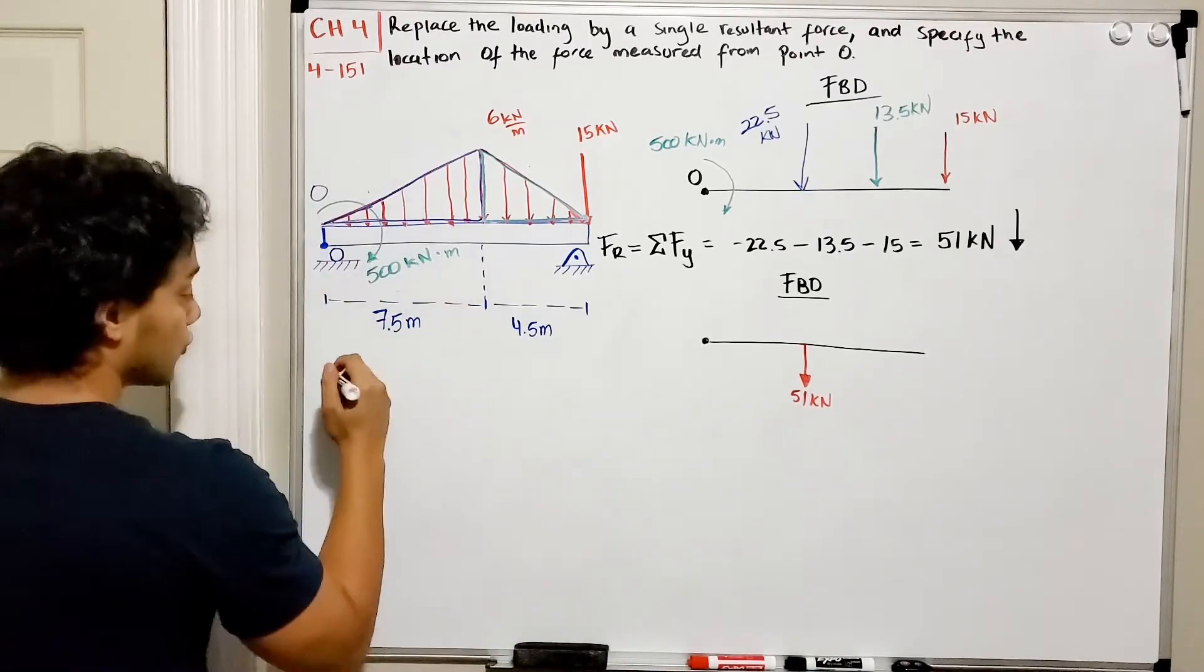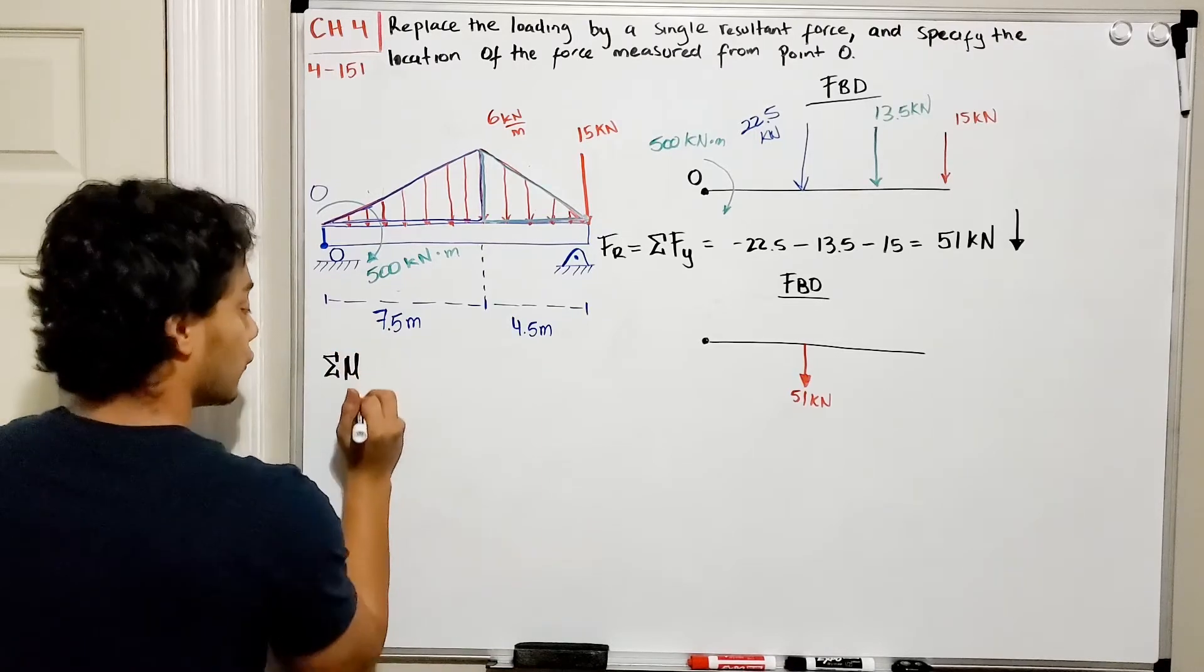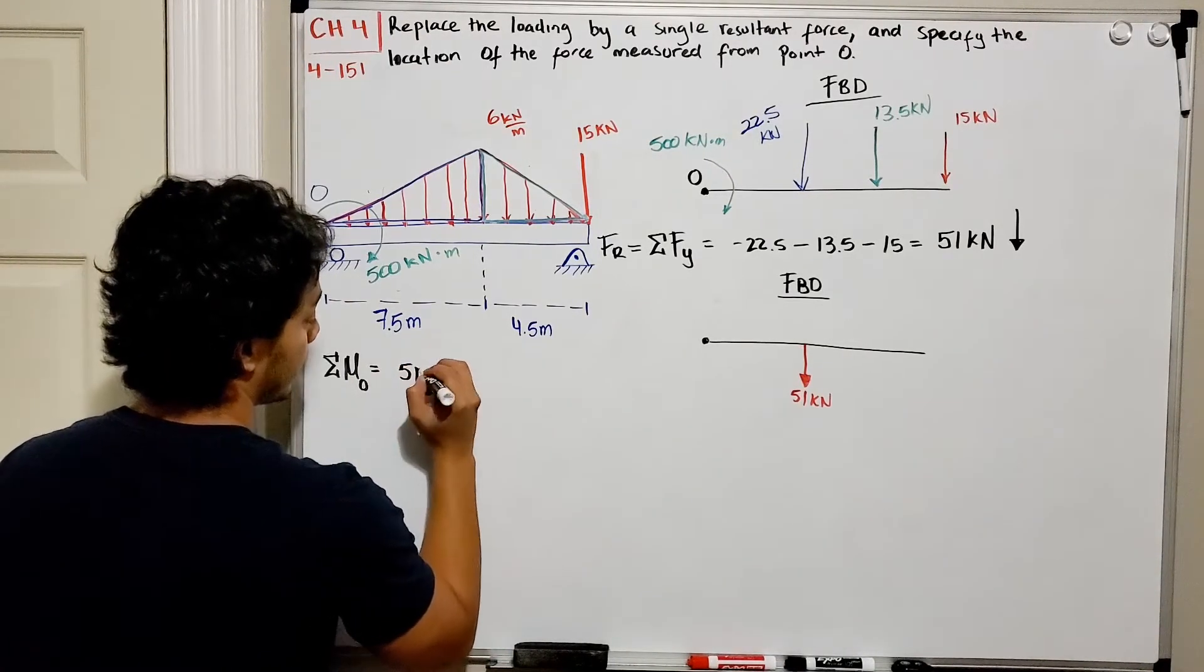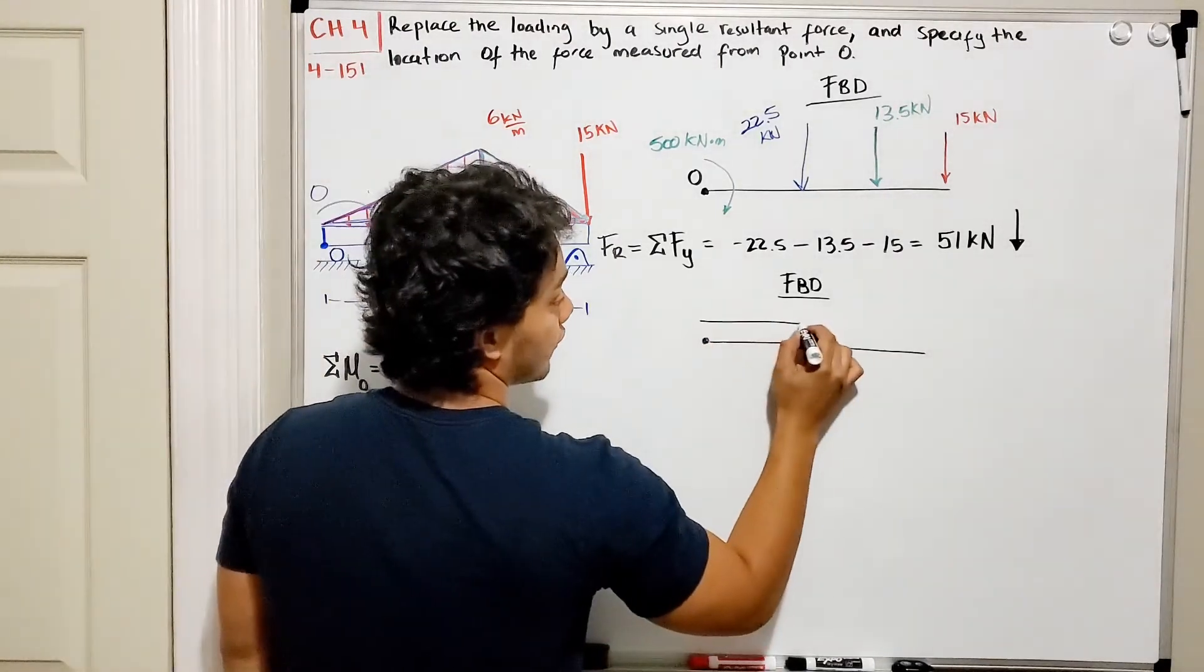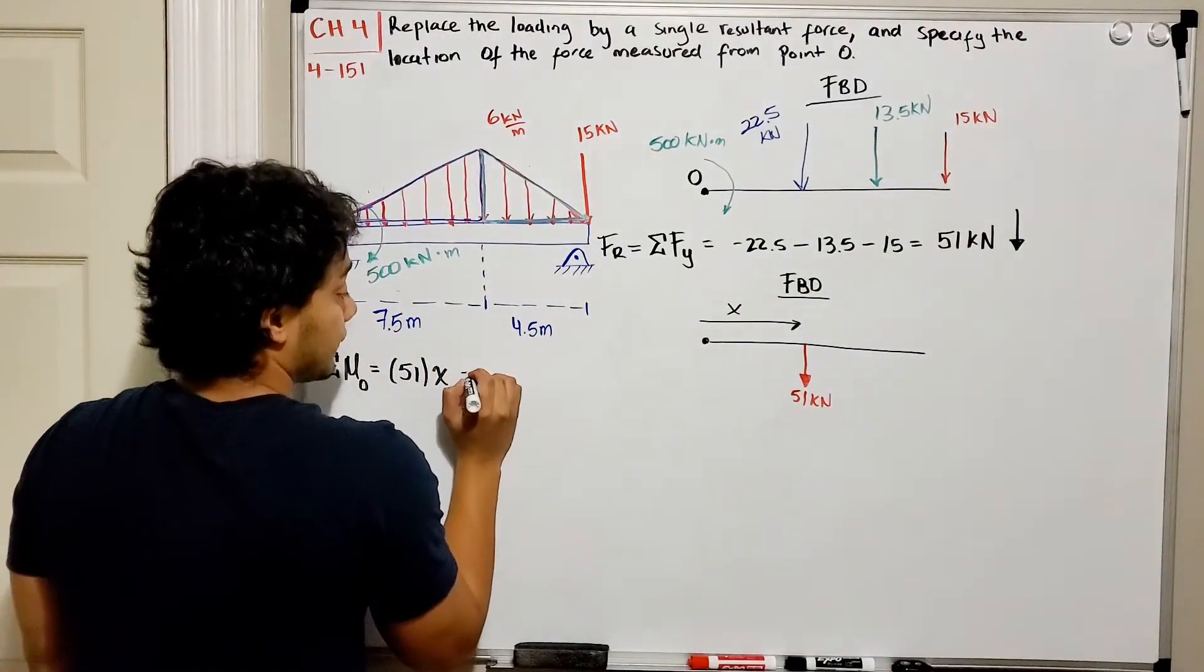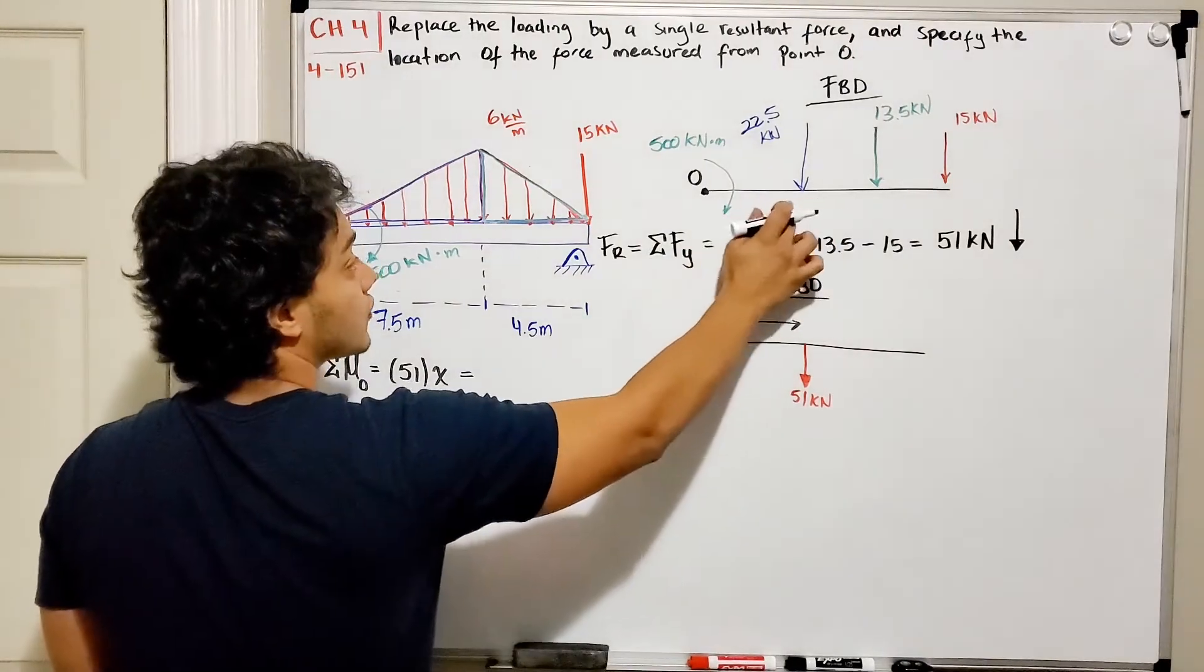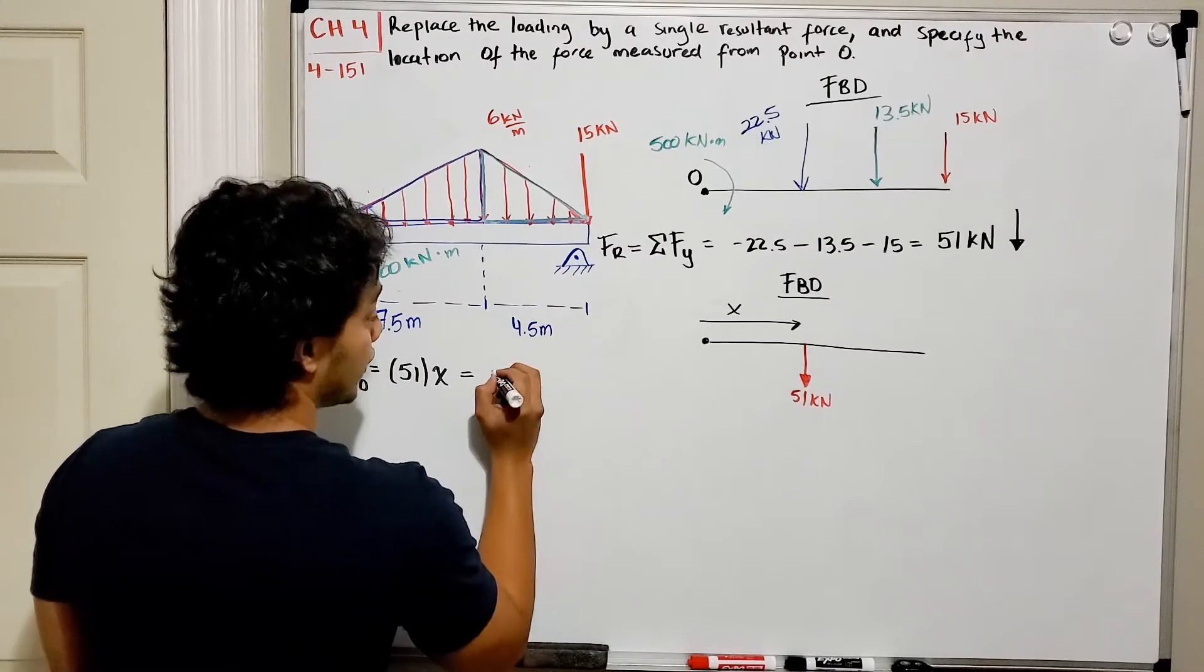This force has to do the same moment that this distribution load had and this 500 kN·m moment. So knowing that, we know that the sum of moments at point O has to be equal. Then I have to have my resultant force which is 51 multiplied by x, so the distance from here to here is my distance x which I don't know yet.